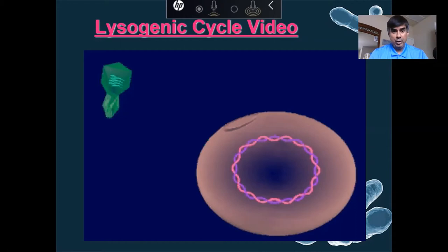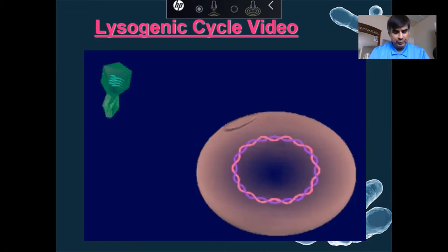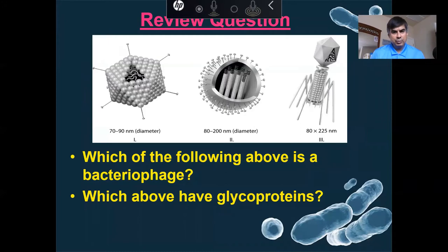The lytic cycle causes the cell to die pretty much right away within hours. The lysogenic cycle hides itself inside the host chromosome for a while, possibly for a long time, but then it could possibly go into the lytic cycle. Make sure you go back and review. What I want to do is start off this lecture by giving you review questions to see if you've been doing your Khan Academy lessons.